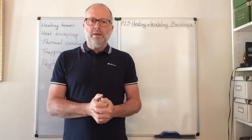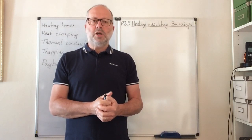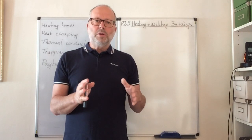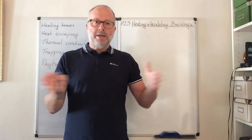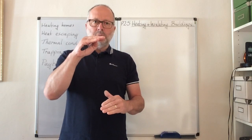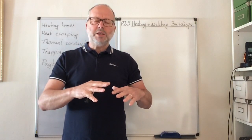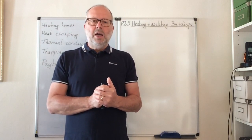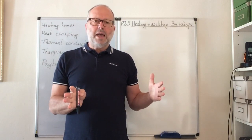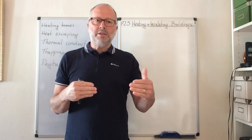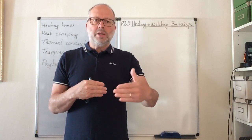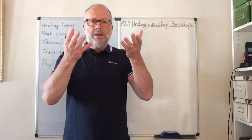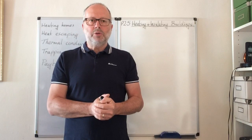If you live in a flat, your place is better insulated because not much of your home's walls are on the outside — you share inside walls with other flats to either side and maybe above and below. If you live in a terraced house, only the front and back walls allow heat to escape because the sides are attached to other houses. In any house, heat also rises and can go out through the roof.